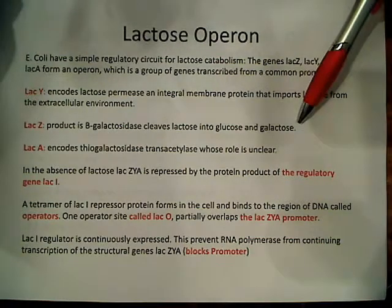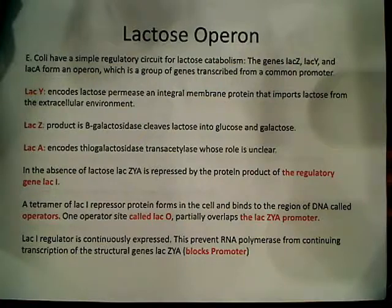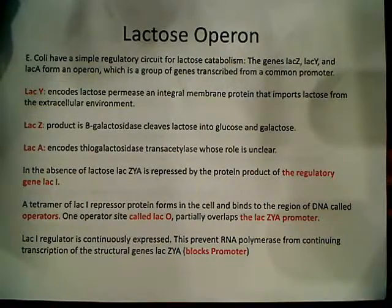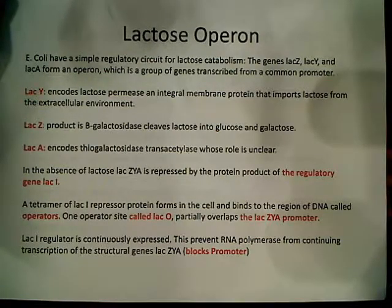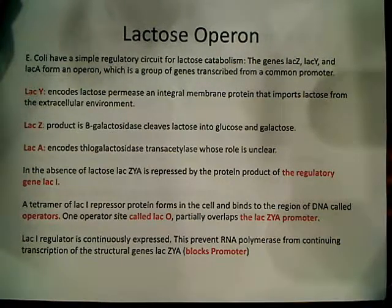Beginning with lacZ, because that's the first one we usually talk about, the product of lacZ is beta-galactosidase. Beta-galactosidase cleaves lactose. Lactose is a disaccharide — it consists of one glucose monosaccharide and one galactose monosaccharide. We only use monosaccharides for energy sources. In this case we're talking about E. coli, so we're talking about bacteria, and it cleaves lactose to glucose and galactose.